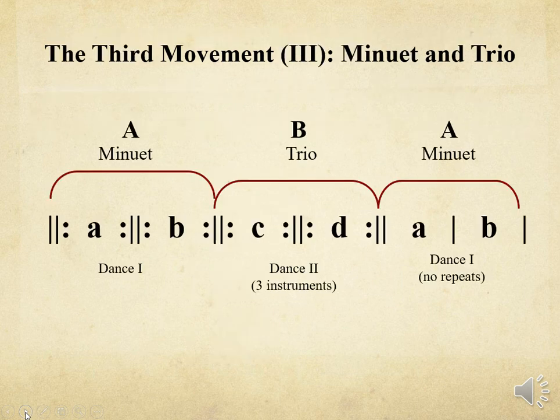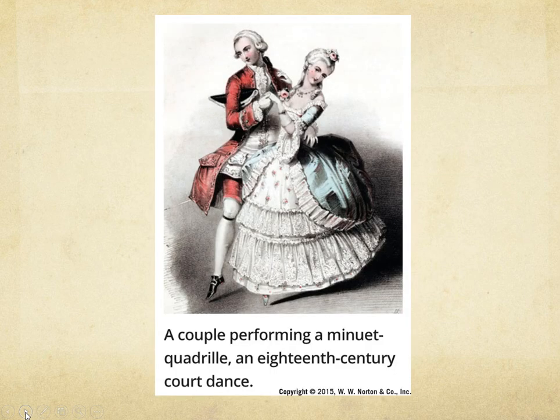The third movement in the classical multi-movement cycle is the minuet and trio, an ABA form. The A is a minuet, and the B is a contrasting trio played by three instruments. It starts out with the minuet, which has an A and B section that are repeated, then goes to the contrasting C and D sections — different music, both repeated — and then the A minuet comes back, this time with the A and B sections not repeated. Minuets were actually based on minuet dances, and this would be an 18th century court dance.